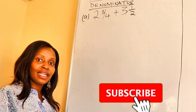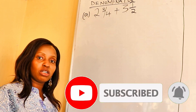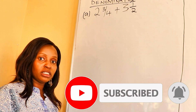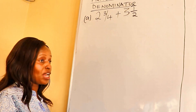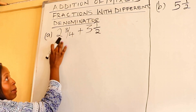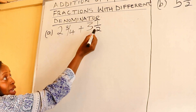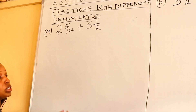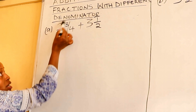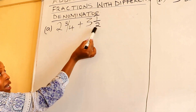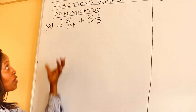Welcome to my YouTube channel. Today's lesson is about addition of mixed fractions with different denominators. A mixed fraction is a fraction that has a whole number and a fraction. For example, two and three-quarters — where two is the whole number and three over four is the fraction — and three and a half, where three is the whole number and one half is the fraction.